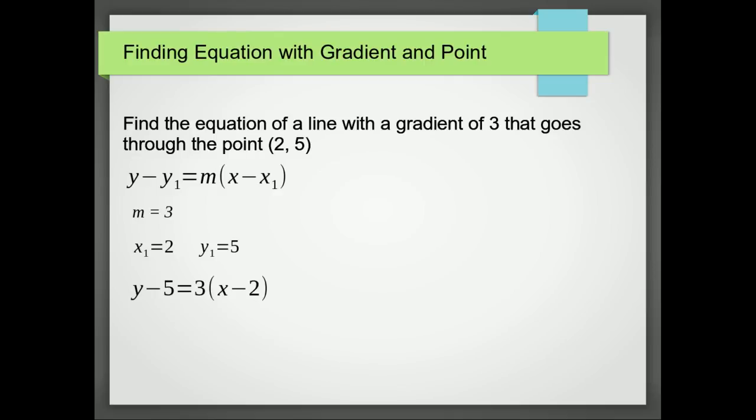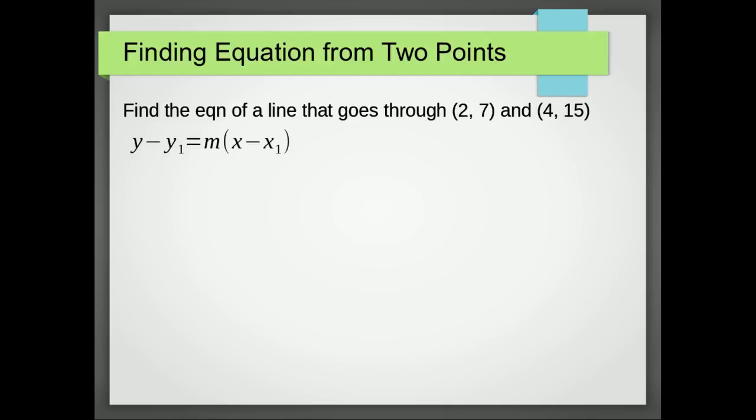What about finding the equation from two points? Now there are several ways of doing this, but if we want to do it with that formula, the first thing we do is we find the gradient. So the gradient is just going to be the change in y, delta y, over the change in x, delta x.